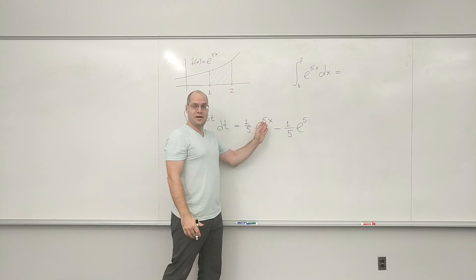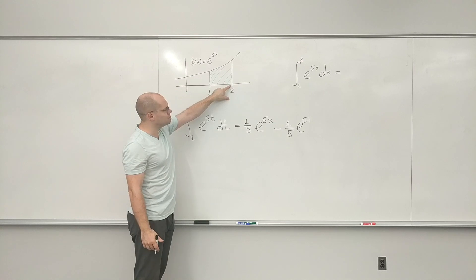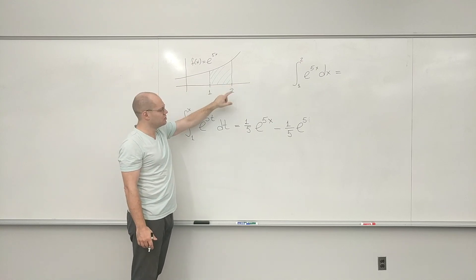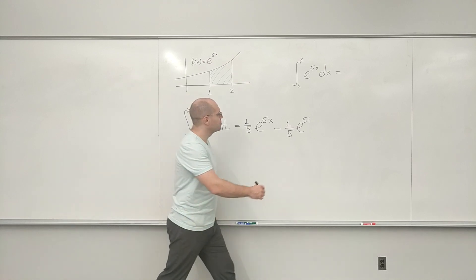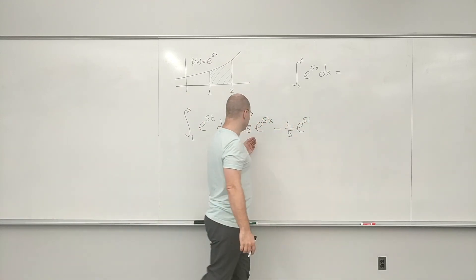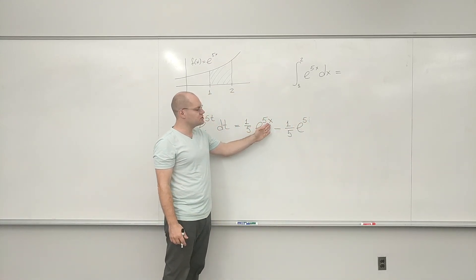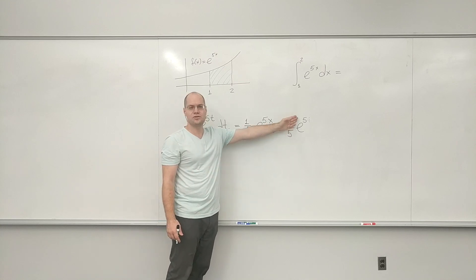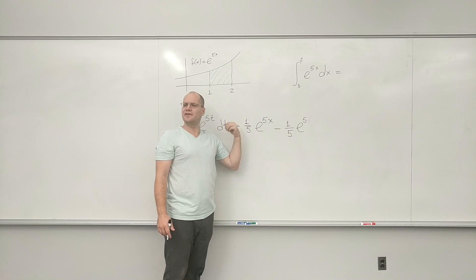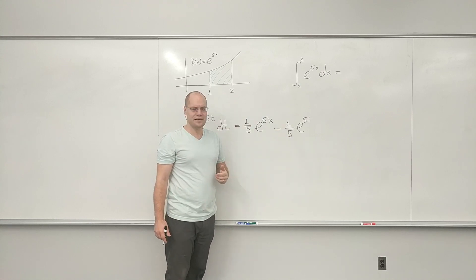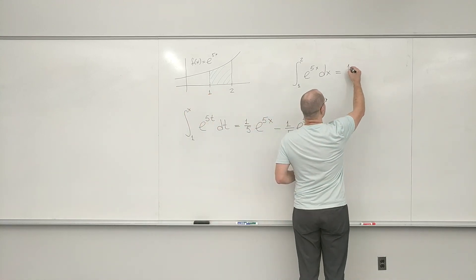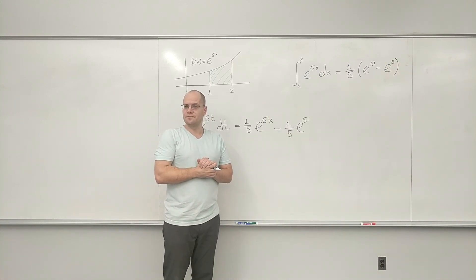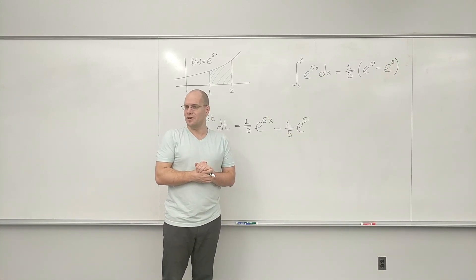All right. So now we have our answer for any x, but we're being asked for a specific x from 1 to 2. Not from 1 to any x, from 1 to 2. So now we have to plug in 2, and we get 1 fifth e to the 10 minus 1 fifth e to the 5. Maybe I'll factor out the 1 fifth. I think that's appropriate. We have solved our third integration problem. There you go.